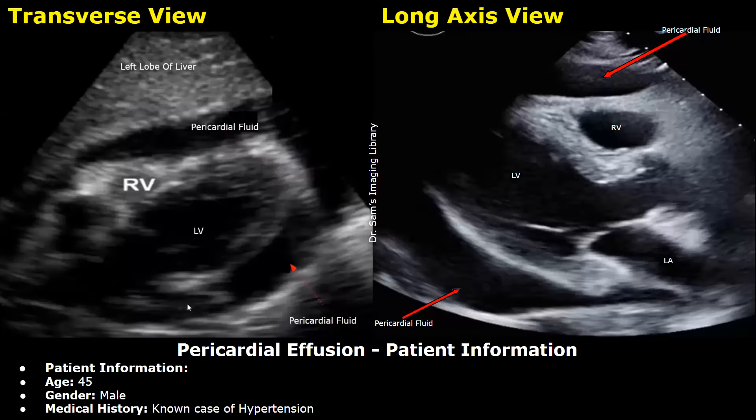The reports will include the patient information, findings, impression, and recommendations. Our first example is regarding pericardial effusion. This is a report on a patient with pericardial effusion due to a motor vehicle accident. Patient information: age 45, gender male, medical history: known case of hypertension.